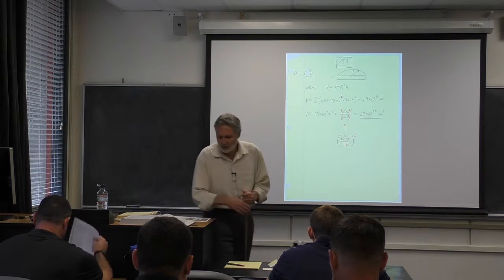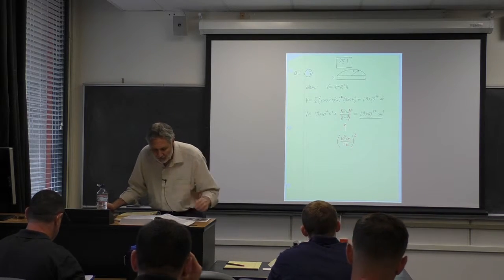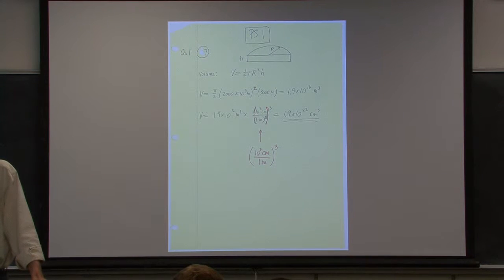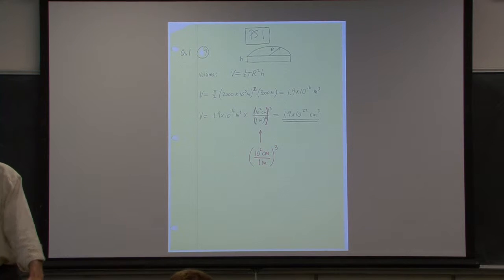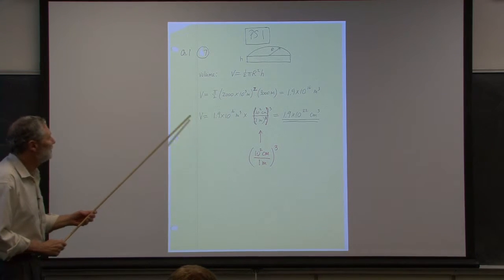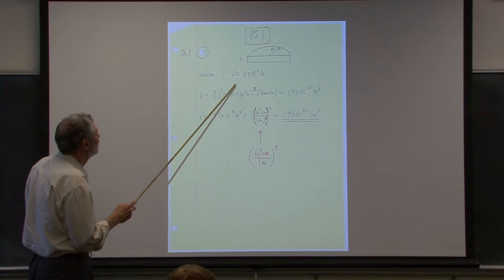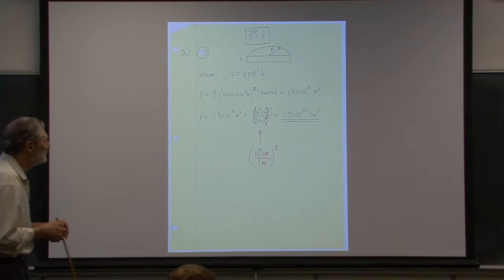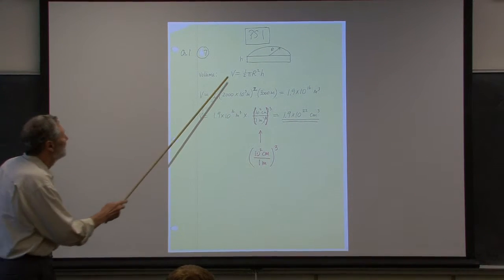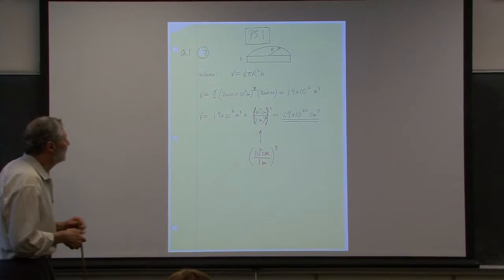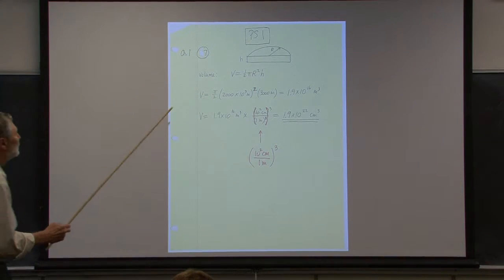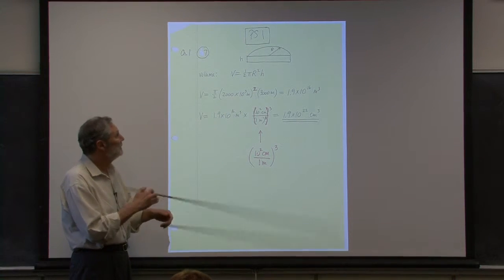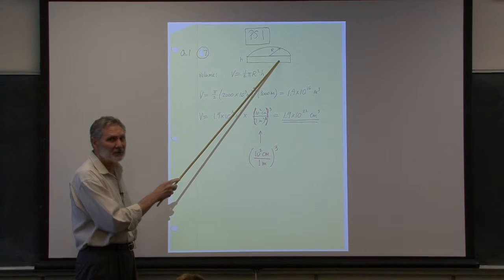So the first one is Chapter 1, problem number seven. This is a very rough model of the geometry of Antarctica — a hemispherical surface with some depth. We're given rough values for the dimensions: the radius is about 2,000 kilometers, and the thickness or height is 3 kilometers. We want to express the volume in cubic centimeters.